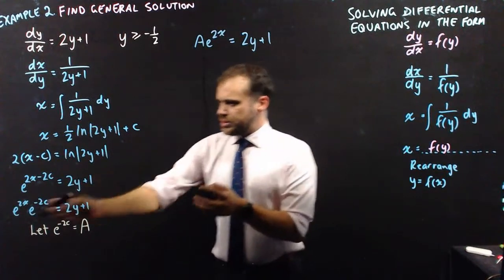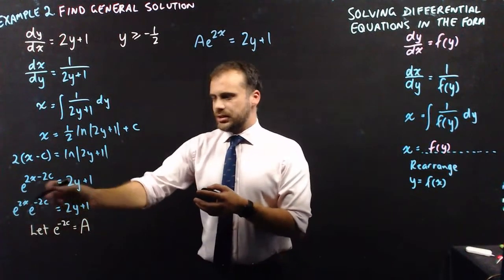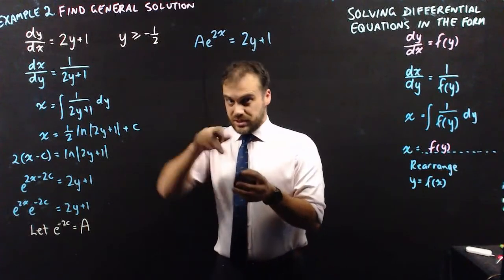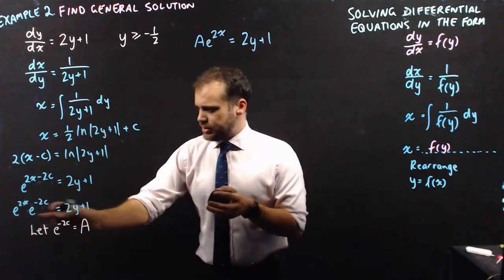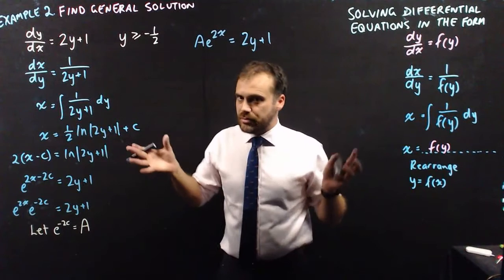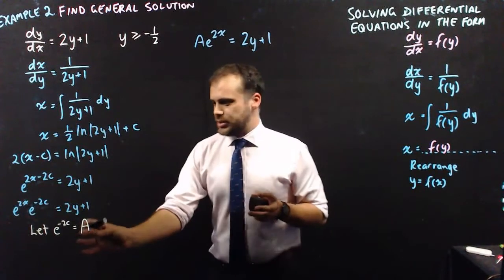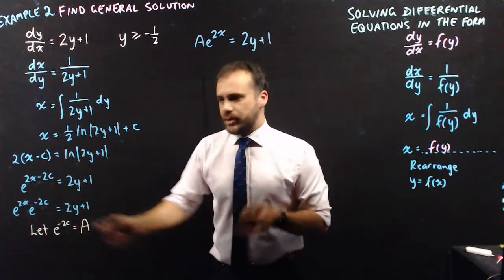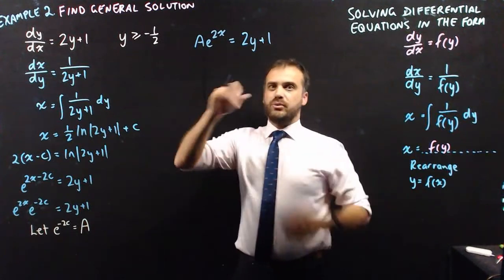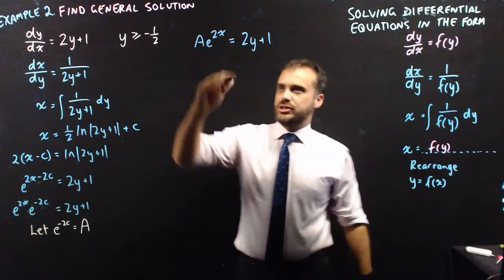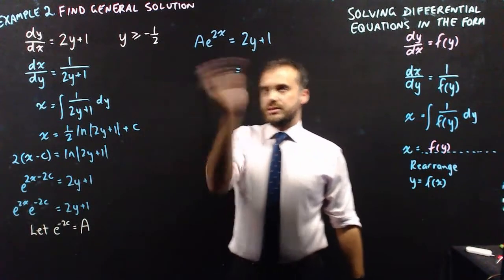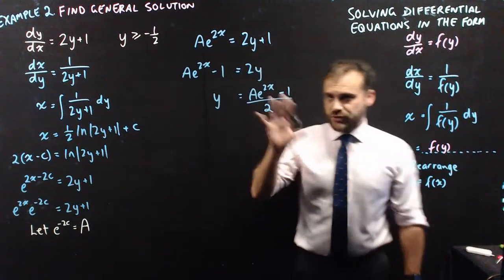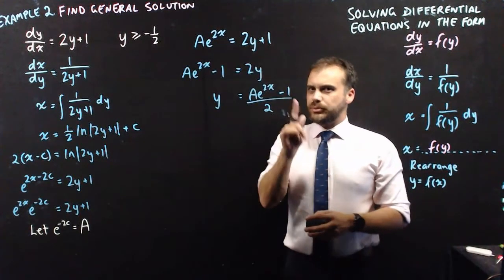And when I do that, this equation becomes a e to the 2x equals 2y plus 1. Why do we do it? Well, it's just because it's superfluous to have this e to the negative 2c here. c is everything, and this just ends up being an everything number anyway. So let's just consolidate it into this everything number. Once we've got that, we just rearrange it. We can finish this off now. So that's really simple to rearrange. So that's it. That's finished. It's done.